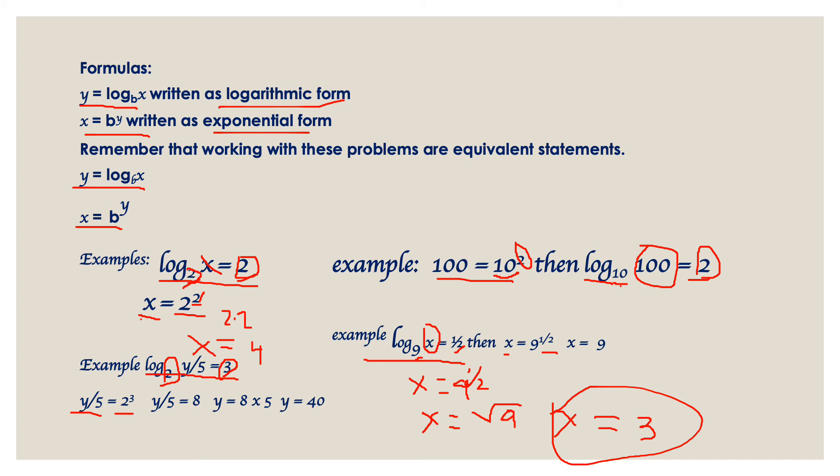Whatever the exponent is, you have to times your base into that. So 2 times 2 is 4, 4 times 2 is 8. So y over 5 equals 8. Y equals 8 times 5, so y equals 40, because you are going to multiply 5 and 8.